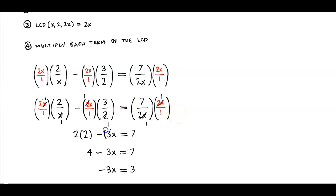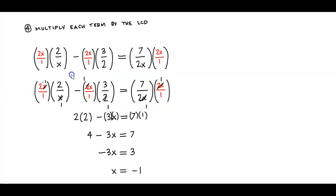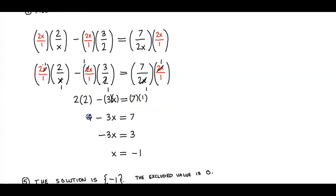So we can see here that we're going to multiply these together, and 7 times 1. So 2 times 2 gives you 4, minus 3 times x, which is 3x, equals 7 times 1, which is 7.